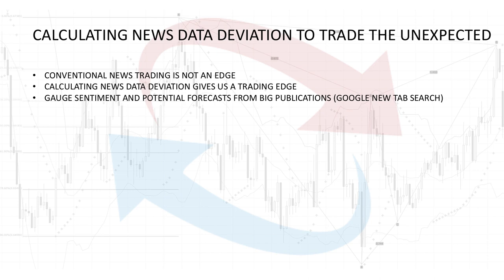Trading is a zero-sum game. Forex trading is definitely a zero-sum game — for someone to win, someone else has to lose. And if the news comes out positive and everybody's buying, maybe 20 years ago that may have worked. But in today's markets, that is just not a trading edge. I'm going to show you how to have a trading edge by calculating news data deviation.